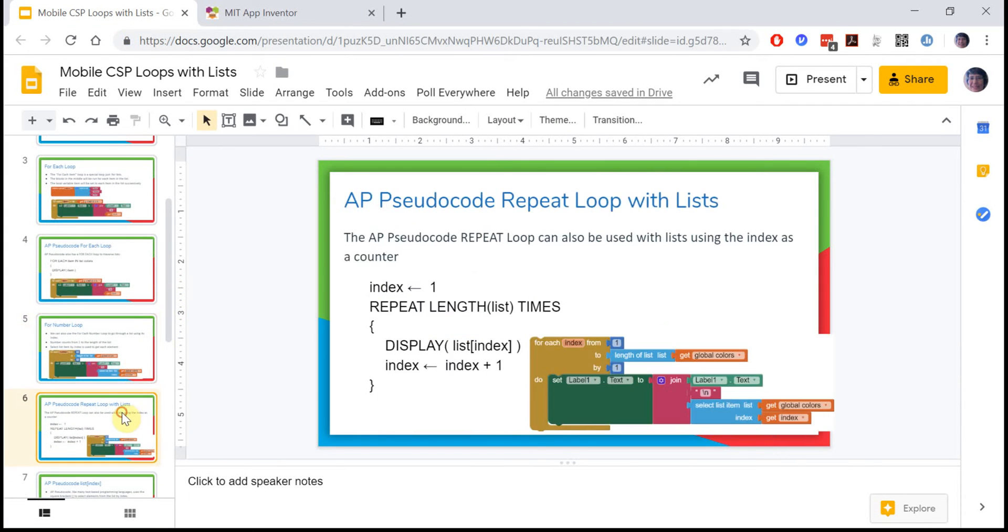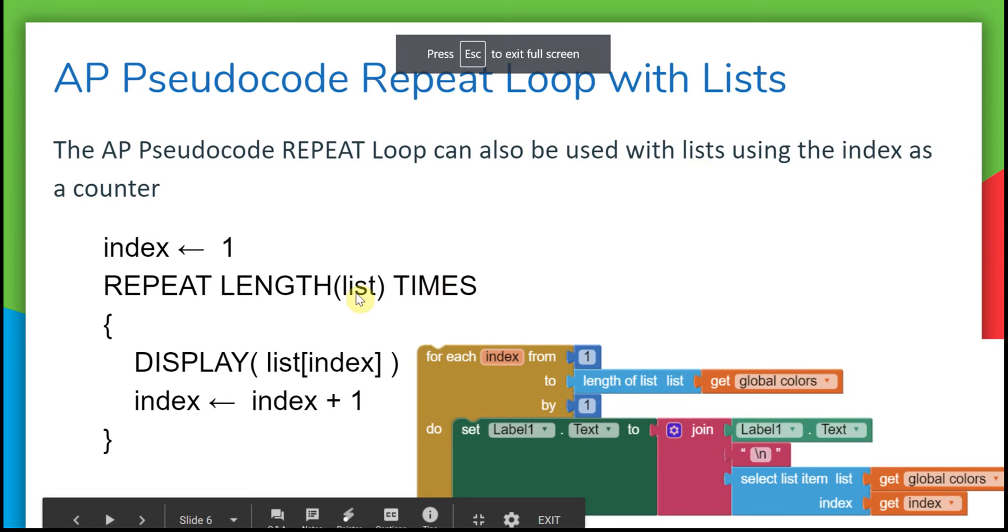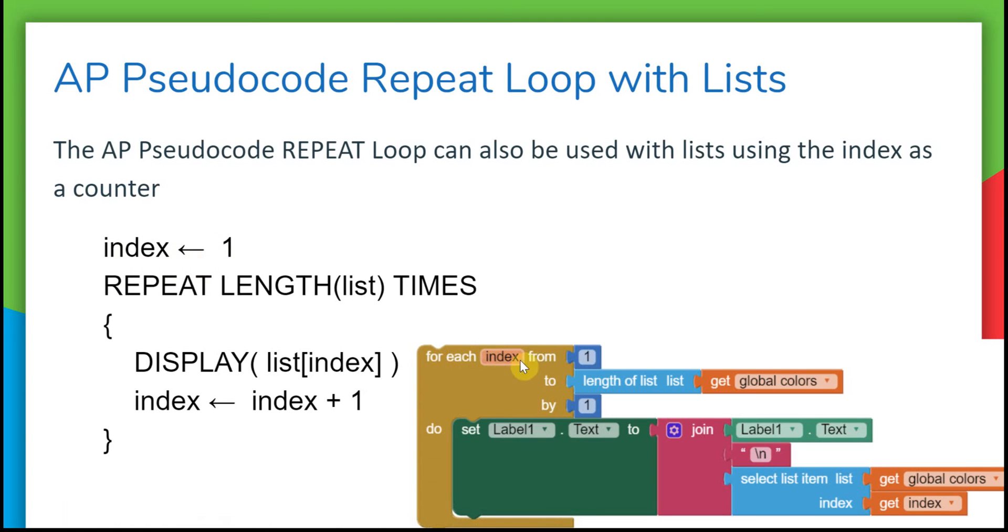In AP Pseudocode, you can do the same with the repeat loop. First, set up a variable called index. Here I've renamed number to index so it's parallel. You repeat the length of the list times, so the loop runs that many times. When you're displaying the item, you use the square brackets to indicate the item at a certain index in the list. Then each time through the loop, you add one to index.